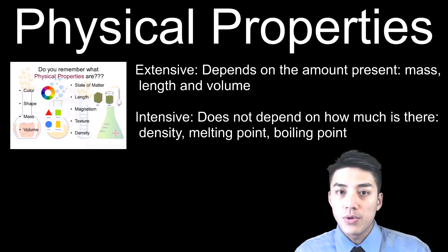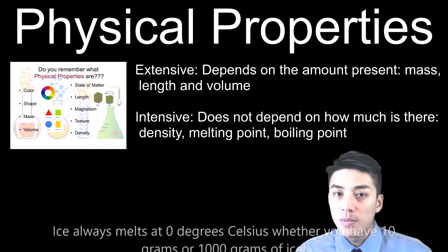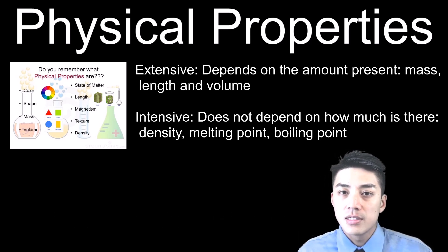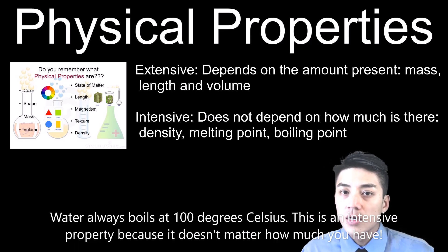Or the melting point of ice is still the same. Whether you have 10 grams of ice or if you have a thousand grams of ice, it all melts at zero degrees Celsius. Or if you want to boil water, water will always boil at 100 degrees Celsius, regardless of how much is there.